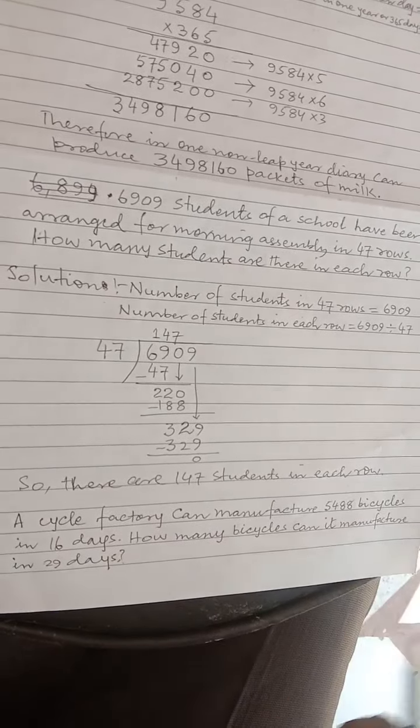Number of bicycles manufactured in 16 days is 5,488 and number of bicycles manufactured in one day will be equal to 5,488 divided by 16. When we divide, the quotient is 343. This means the number of bicycles manufactured in one day is 343.